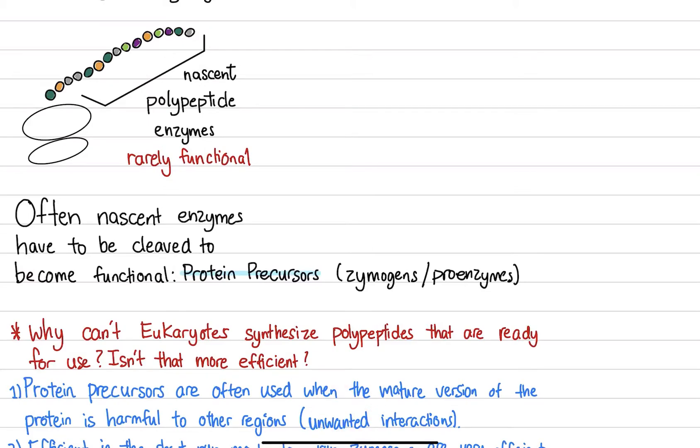Because of that, the zymogen essentially has other amino acid sequences on the entire polypeptide that have to be cleaved off. It could be cleaved off in the start, in the middle, or towards the end. But there's some kind of cleavage involved in the process of making it active.